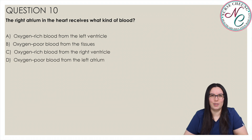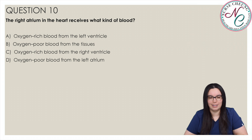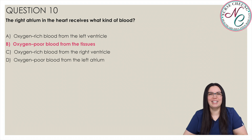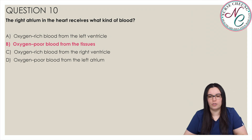Moving on to our last question: the right atrium in the heart receives what kind of blood? Is it A, oxygen-rich blood from the left ventricle; B, oxygen-poor blood from the tissues; C, oxygen-rich blood from the right ventricle; or D, oxygen-poor blood from the left atrium? The correct answer is B, oxygen-poor blood from the tissues. The right atrium is the first of the four chambers to receive blood from the body. After the blood leaves the right atrium it travels to the right ventricle and to the lungs, and so on until it leaves the heart through the systemic circulation.